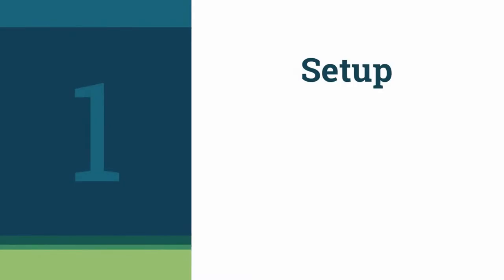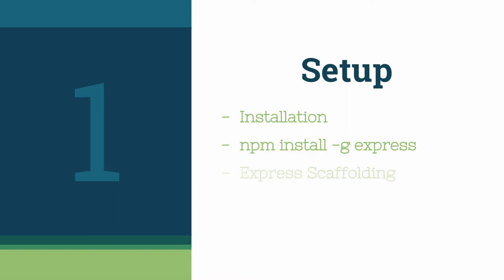In this video, we'll cover the basic setup for installing and configuring an Express-based app. We'll discuss the -g flag for global installation versus installing Express locally. We'll take a look at what an auto-generated app looks like when using the Express command. We'll take a first look at Jade, which is a templating engine included in an Express scaffold. And we'll introduce the concept of middleware before digging deeper into it in a later video.